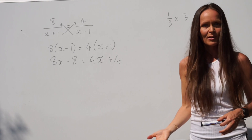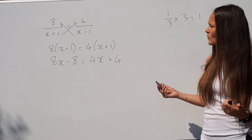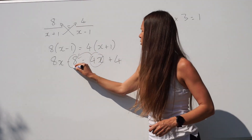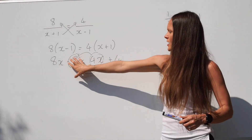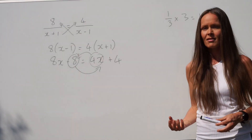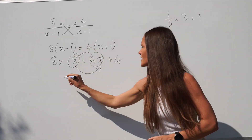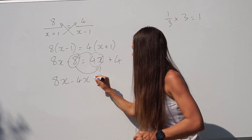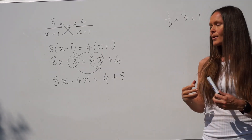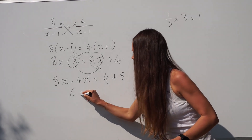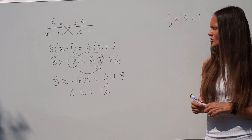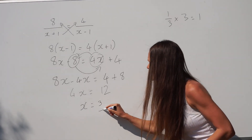Next, I want to get the x terms on one side of the equation and the non-x terms on the other. I'm going to move the small x term over to the left hand side so that the x terms stay positive, and move the numbers over to the right hand side. Remember the terms that move across the equal sign change sign. So this positive 4x when it moves over here changes to a negative, and when the negative 8 moves over here it changes to a positive. So 8x take away 4x is 4x, and 4 plus 8 is 12. The last step is to divide both sides by 4, so x is equal to 3.